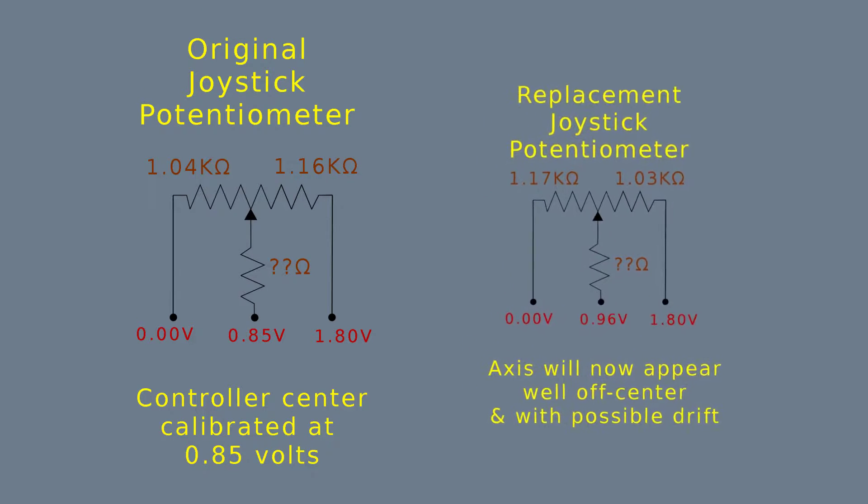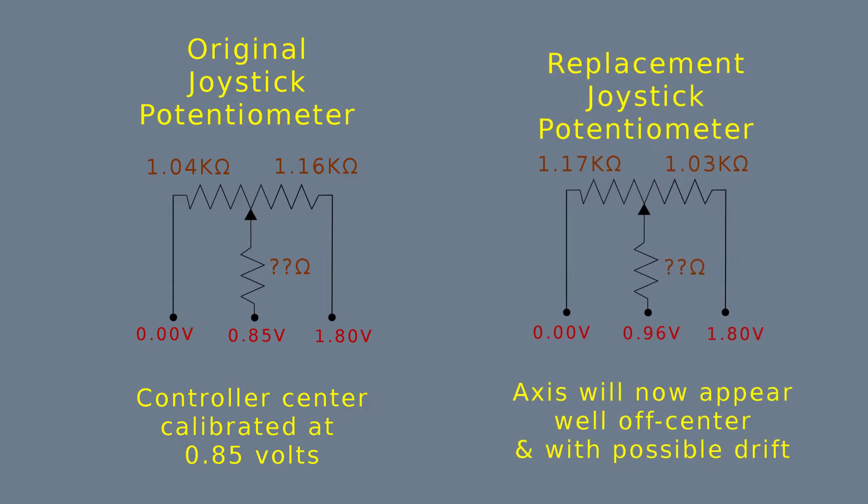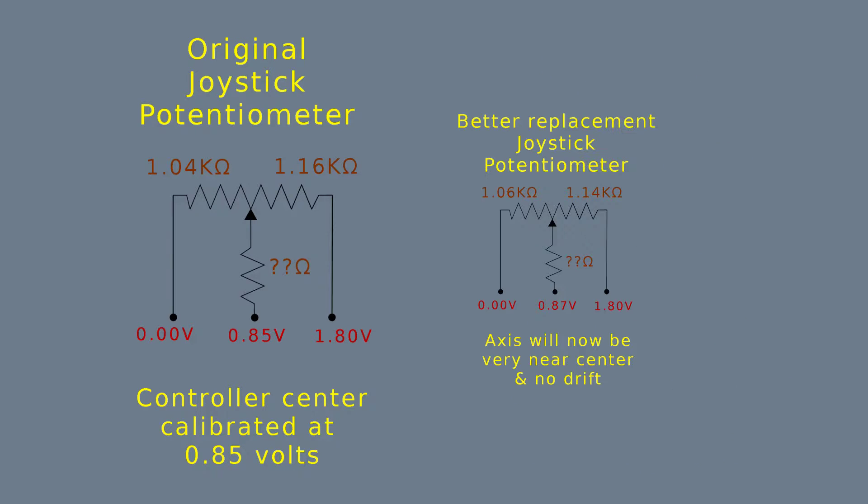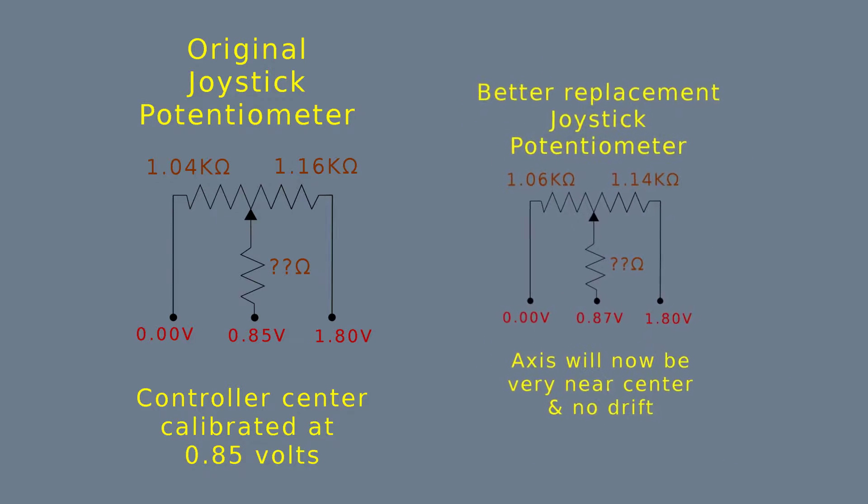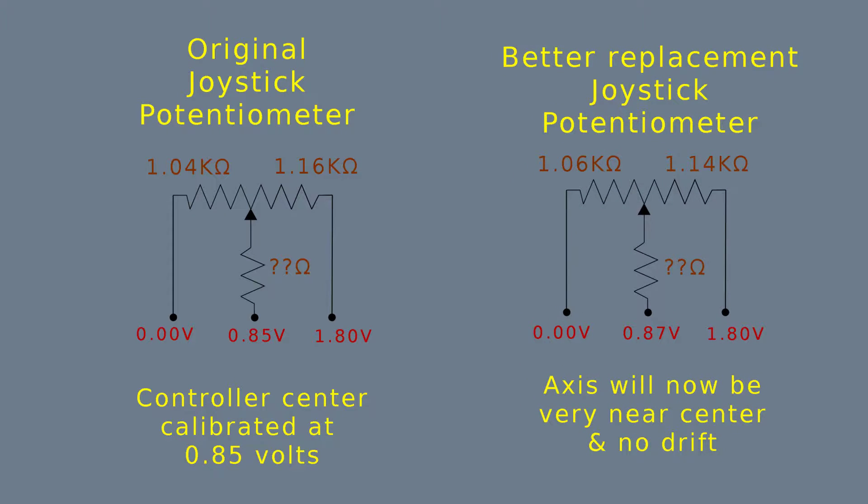These are not precision potentiometers in these joysticks. So if the original is off in one direction and the replacement is off in the other direction, there is a possibility that it is going to cause a too far off center problem. Just about the only solution for that is to replace that potentiometer and try again. There are some measurements that can be taken to assist in finding a closer replacement, but that will have to be a video of its own.